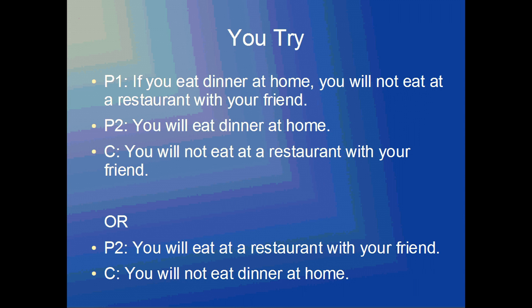Now if we convert this to a conditional syllogism, for the first premise we get: if you eat dinner at home, you will not eat at a restaurant with your friend — eating dinner at home is supposed to cause you to not eat at a restaurant with your friend. In the second premise we confirm that you will eat dinner at home, and then the conclusion is that you will not eat at a restaurant with your friend. For the alternative second premise, we deny the consequent from the first premise — instead of 'you will not eat at a restaurant,' we say 'you will eat at a restaurant with your friend.' Since the consequent has been negated, the antecedent must also be negated, so the conclusion is: you will not eat dinner at home.